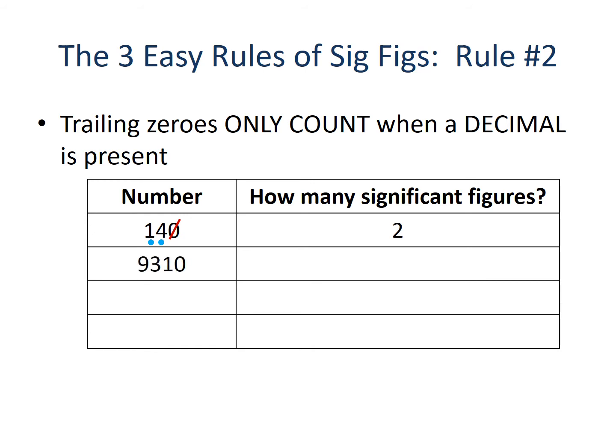Our next number is 9310. Rule number two says trailing zeros only count when a decimal is present. Without a decimal, that ending zero goes away, and our remaining numbers — nine, three, and one — count towards our significant digits. So 9310 without a decimal has only three significant figures.